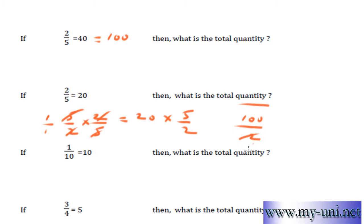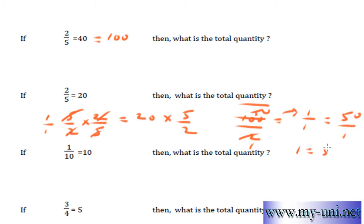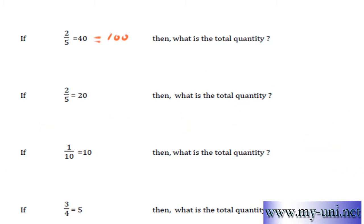2 times 50 is 100, so this is 1 over 1 is equal to 50 over 1, or 1 is equal to 50. So the whole quantity is 50. This is equal to 50.